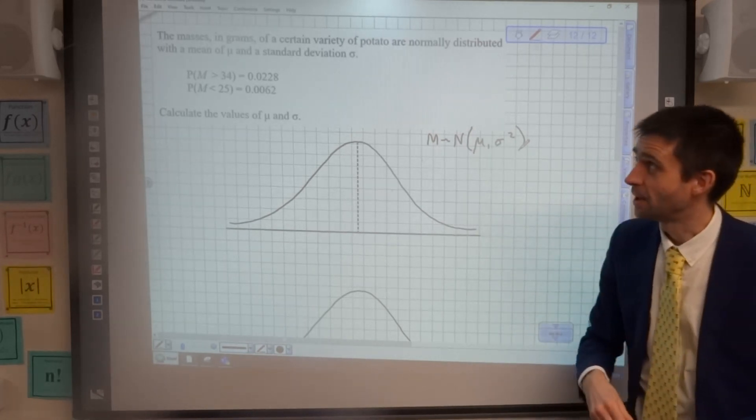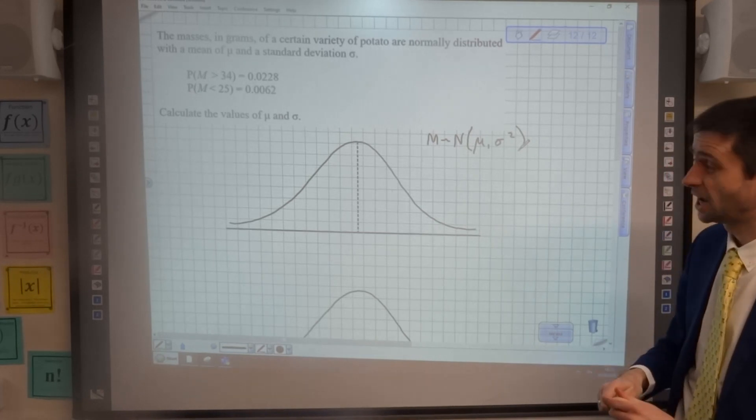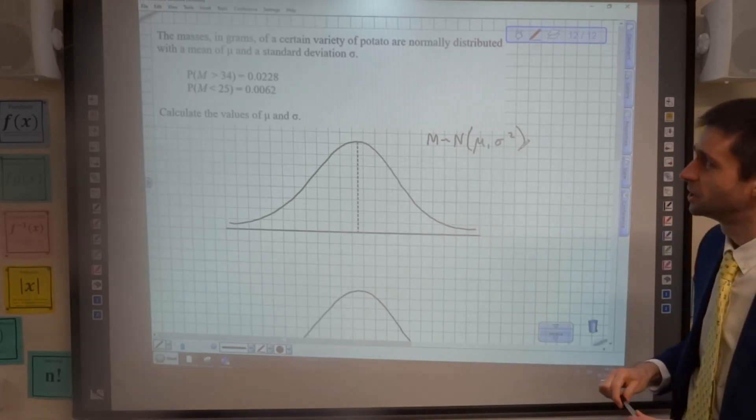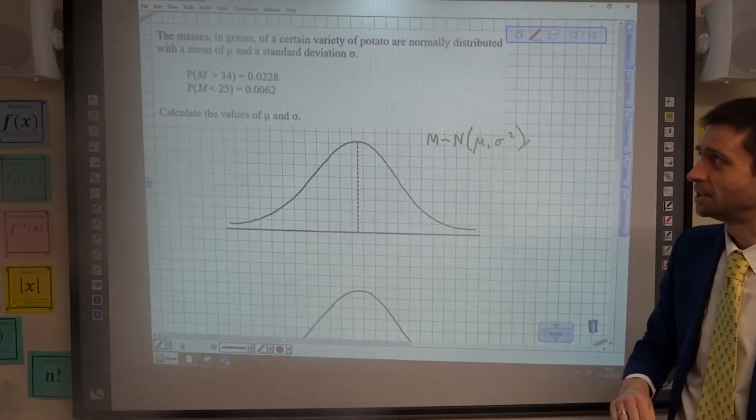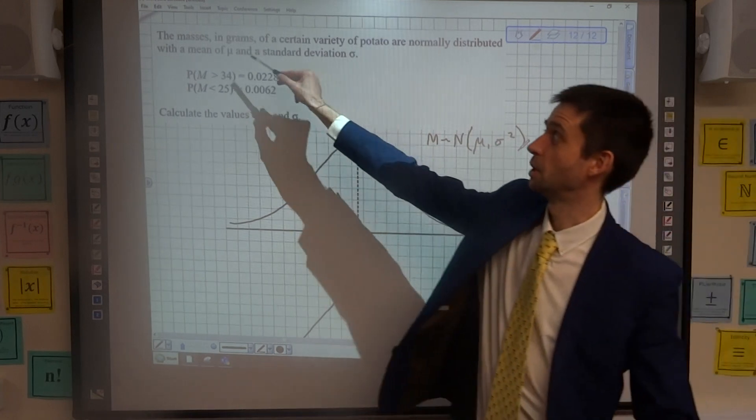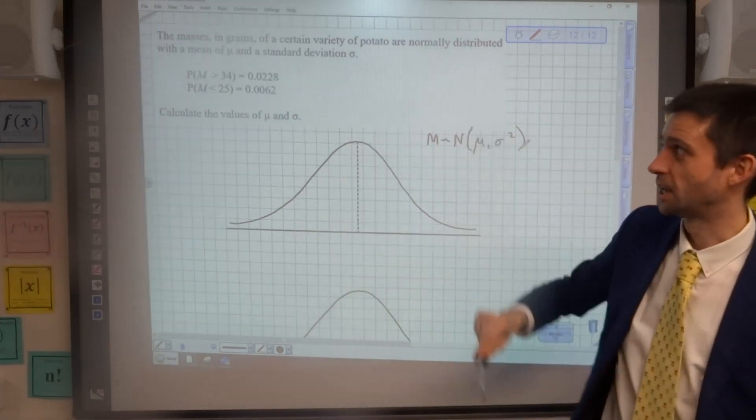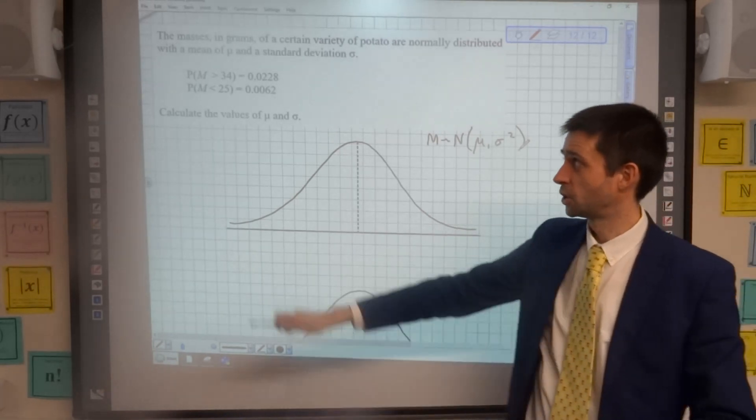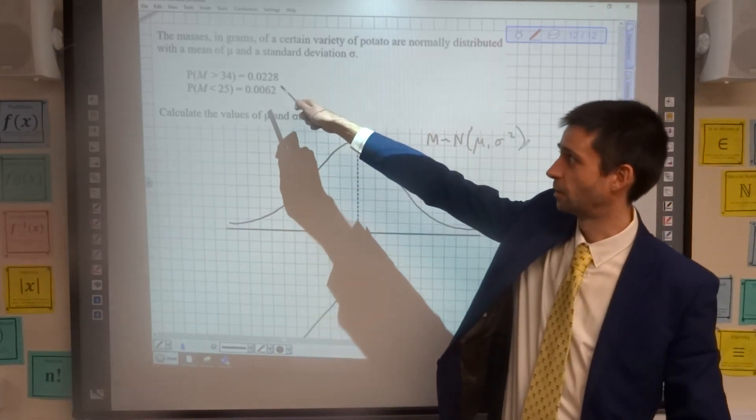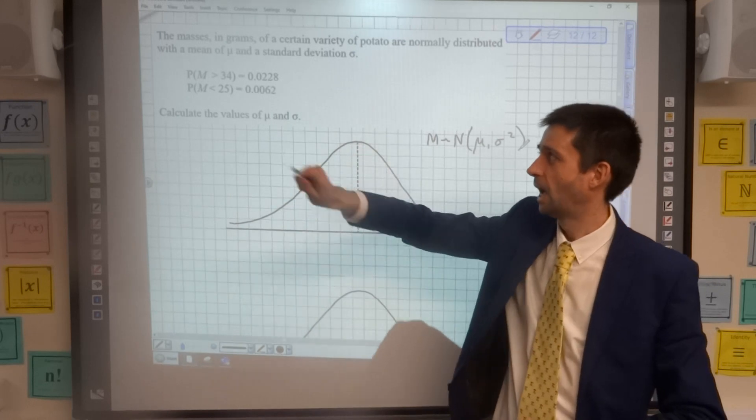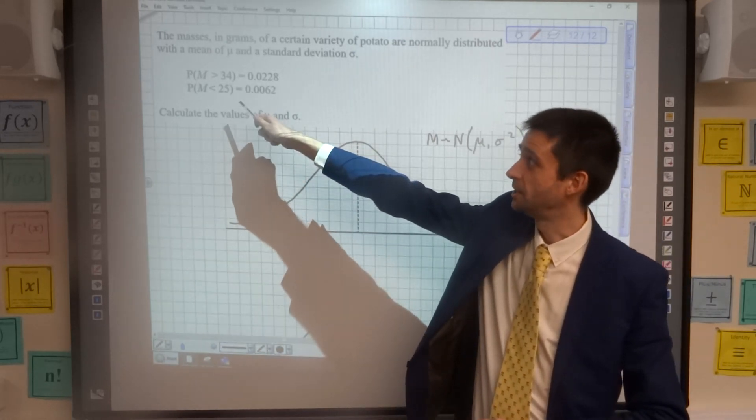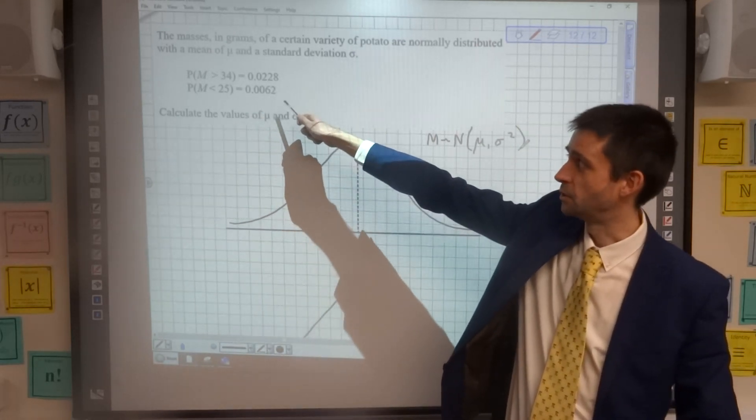The situation we have here is that the masses in grams of a certain variety of potato are normally distributed with a mean of mu and a standard deviation of sigma. We don't know either the mean or the standard deviation. But we're told that the probability that m is greater than 34 is 0.0228, and the probability that m is less than 25 is 0.0062.